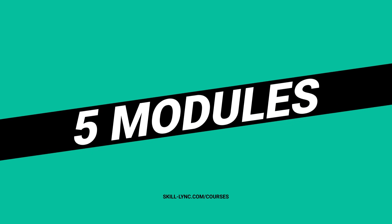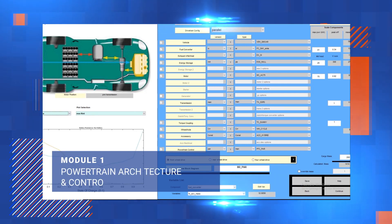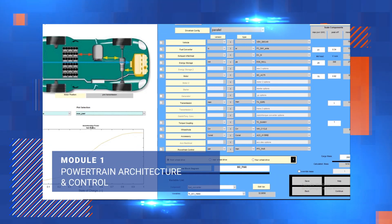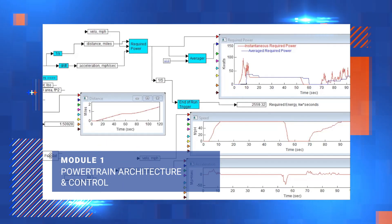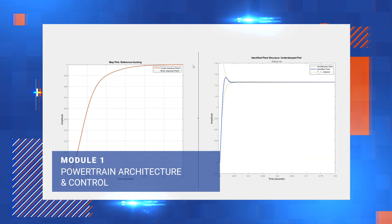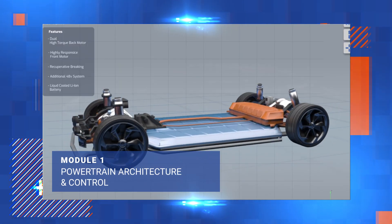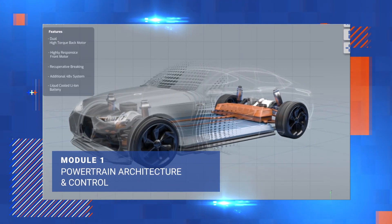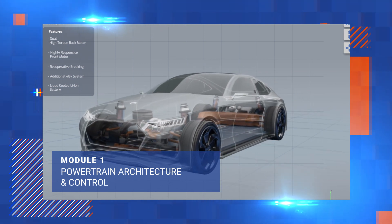The course has five modules. In Module 1, you will learn to see the bigger picture by understanding power and energy calculations, driving cycles, traction motors, power converters and control systems. You will also get to simulate an entire electric vehicle using MATLAB and Simulink.